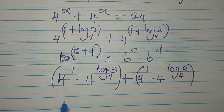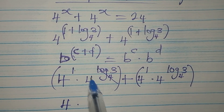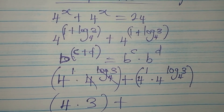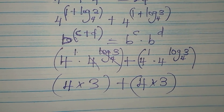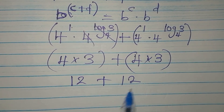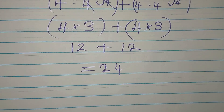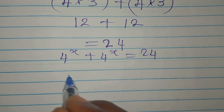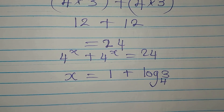4 to the power of 1 is 4, and since 4 to the power of log₄3 has base 4 matching the log base, this simplifies to 3. So we get 4 times 3 plus 4 times 3, which is 12 plus 12, and that gives us 24 — matching the right-hand side. So x equals 1 plus log₄3 is confirmed correct.